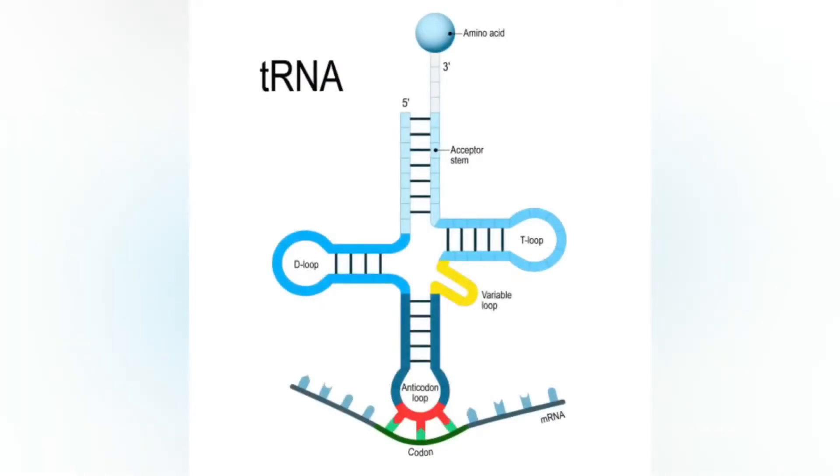tRNA splicing is another rare form of splicing that usually occurs in tRNA. The splicing reaction involves a different biochemistry than the spliceosomal and self-splicing pathways.